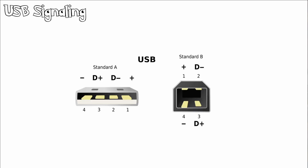Let's take a look at USB signaling. We have the USB Standard A connector that you're all familiar with. This consists of VCC or power, ground, and data lines which are differential signals called D+ and D−. Notice that the power lines are longer and thus get connected to the device first before the data lines. Connecting a USB device to a computer is very simple.